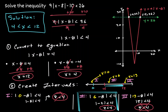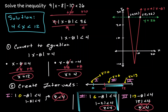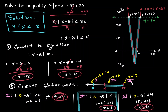Now let's visualize our result. In the graph on the right, the function in red is a graph of the left-hand side: 9 times the absolute value of x minus 8, minus 10. The dotted green line is y equals 26, the right-hand side of the inequality. We're looking for where the red line is lower than y equals 26, which I'll highlight in blue. That occurs between the intersection points at x equals 4 and x equals 12 — the same result we got algebraically.